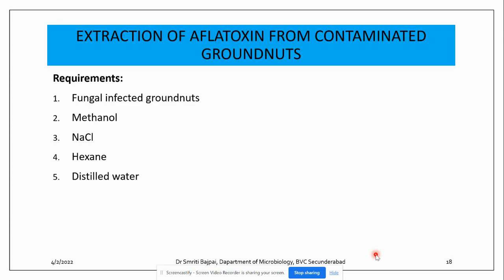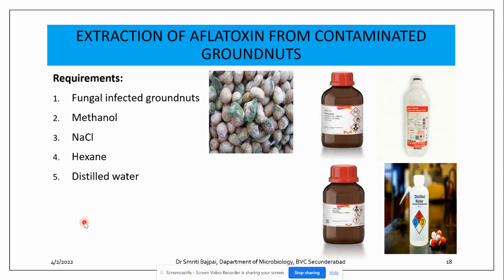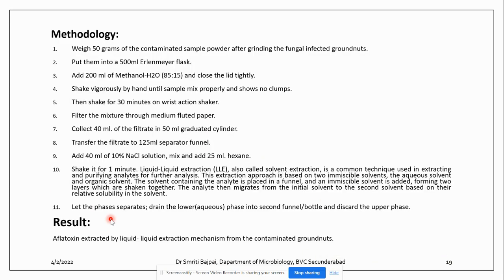Coming to the experimental part — the extraction of aflatoxin from contaminated groundnuts — we need certain requirements. We take fungal-infected peanuts as the food stuff. Apart from that we need methanol, NaCl, hexane and distilled water. We take 50 grams of contaminated sample after grinding the fungal-infected groundnuts into a powder, put the powder into a 500 ml Erlenmeyer flask, then add methanol-H2O at 85% to 15% (v/v) and close the lid tightly.